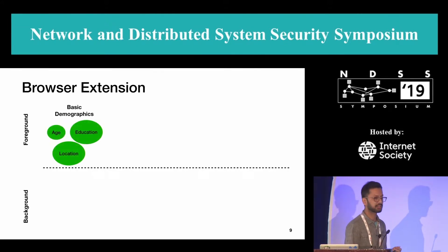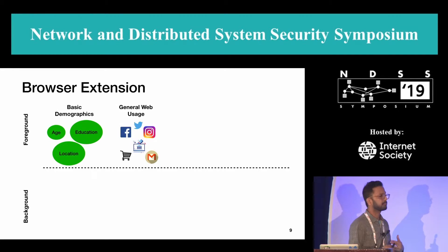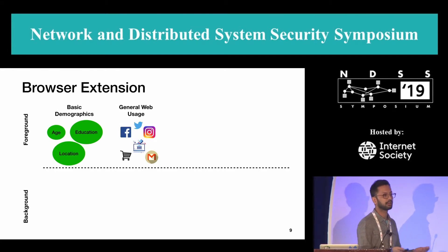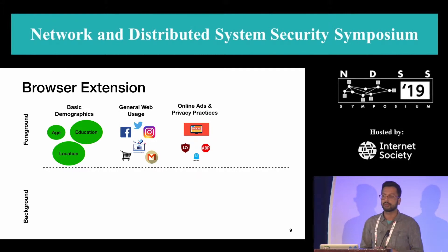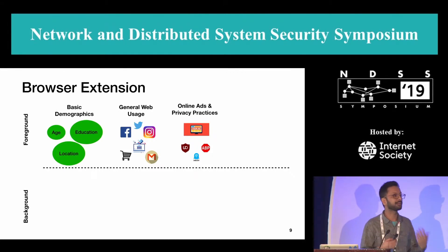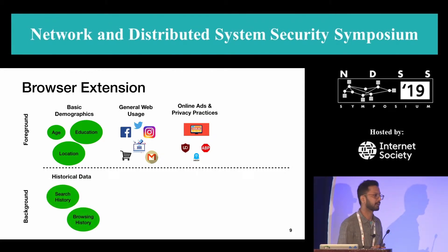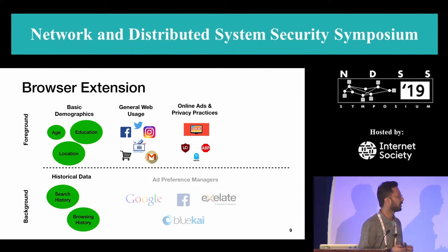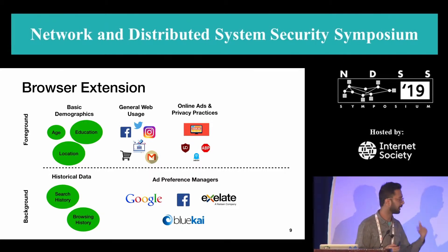In the foreground we asked about basic demographics such as age and location, general web usage questions like how often they visit or post on social media or use banking websites, their interaction with online advertisements, and whether they use privacy tools such as Adblock Plus or uBlock Origin. In the background we collected historical data — the last three months of search history and browsing history — and our major data chunk comes from Ad Preference Managers, where we collect inferences gathered by these companies for each user.